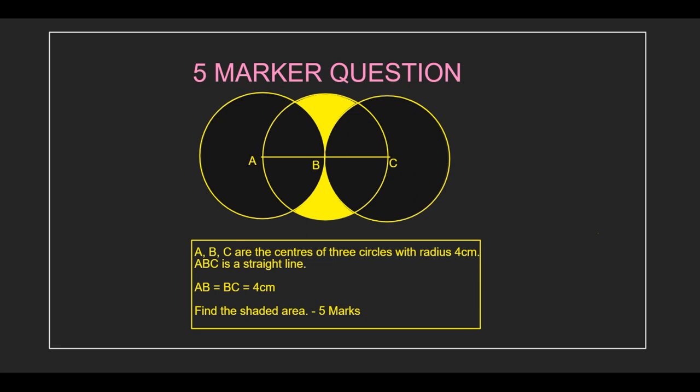Now we'll show the question. Maybe this is the same question or maybe something different. We'll show you how to solve this question. A, B, C are the centers of three circles with radius 4 centimeters. ABC is a straight line. AB equals BC equals 4 centimeters. Find the shaded area. It's a five marker. The shaded area they're talking about is the yellow color bit. These are the information given: ABC are the centers of the three circles, radius is 4 centimeters, and ABC is 4 centimeters.